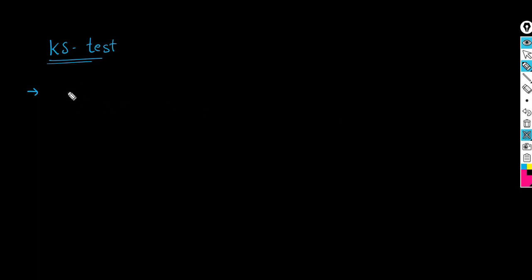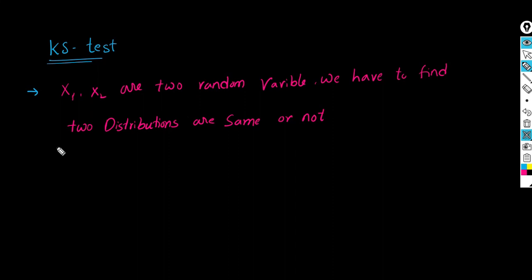For this, let's consider an example. Let x1 and x2 be two random variables. We have to find whether these two random variables follow the same distribution or not, similar to the QQ plot. Like in the QQ plot, we consider a target and an actual distribution that we already know. Let us consider x2 as the target distribution that we don't know.